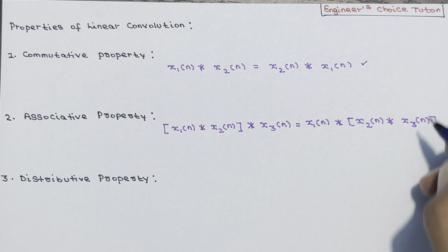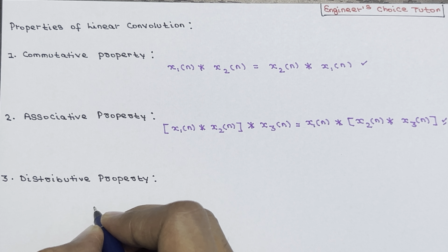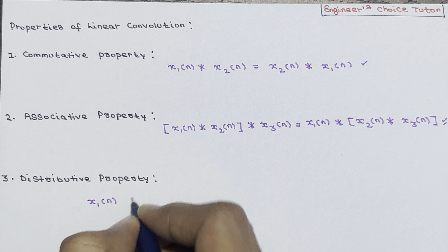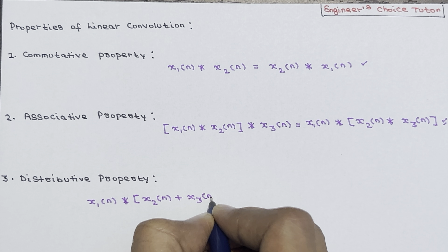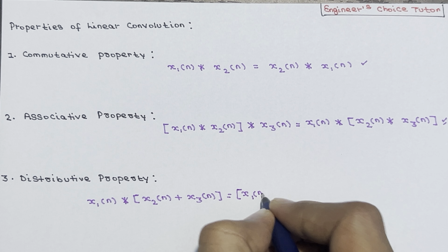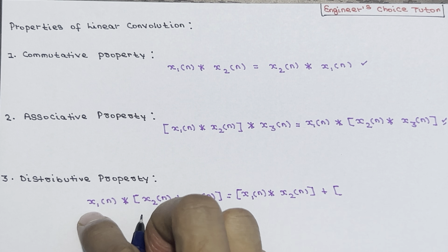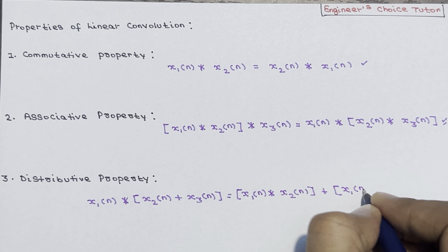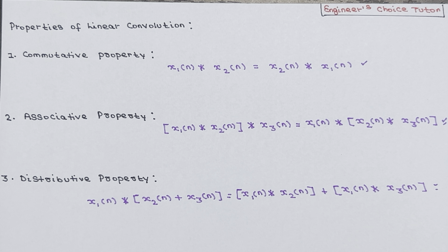The distributive property states that convolution of x1(n) with [x2(n) + x3(n)] equals convolution of x1(n) and x2(n) plus convolution of x1(n) and x3(n). We will prove each of these properties for linear convolution in our next lectures, so for now just remember these properties.